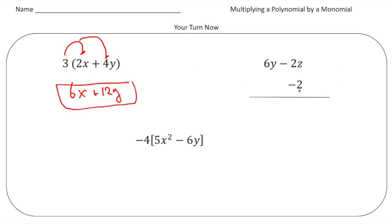All right, now here we have one that's set up vertically. So I'm going to multiply the negative 2 times the negative 2z. So a negative times a negative is a positive. So that's going to be 4z. And to that, we're going to add negative 2 times 6y. And that will be negative 12y. So negative 12y plus 4z. That's the answer for that one.